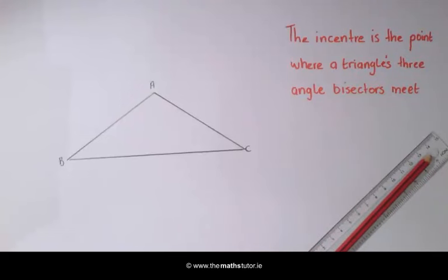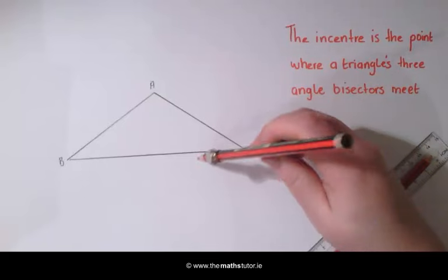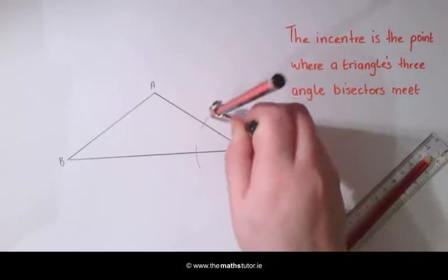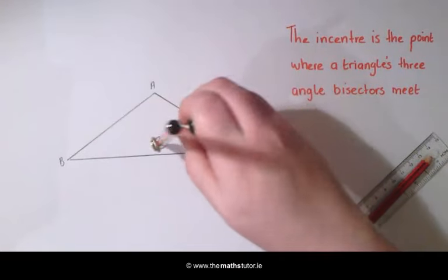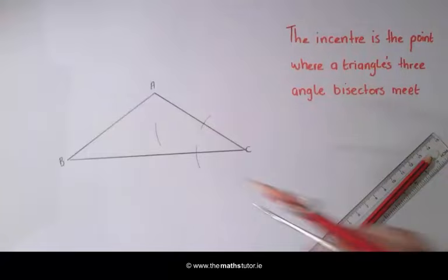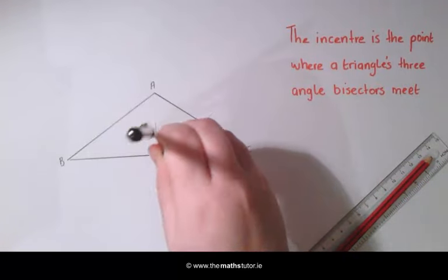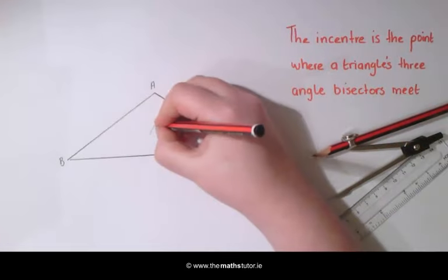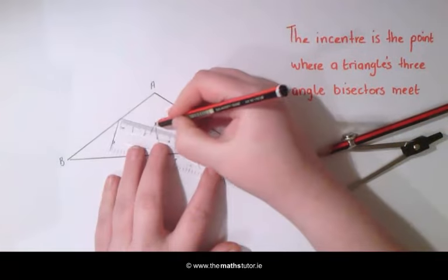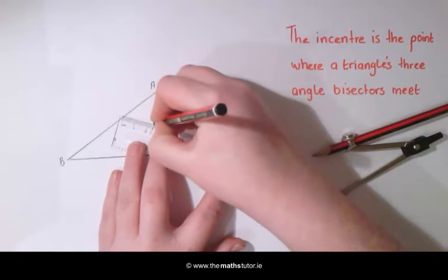Placing our compass on C, we are going to draw an arc across the arms of the angle. We are going to draw a line from it to the vertex C.